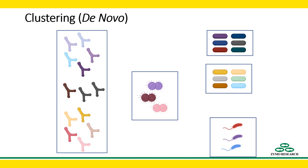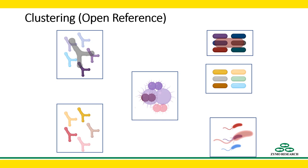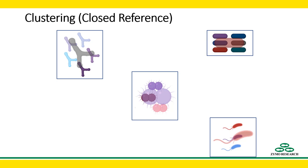Reference databases are now pretty extensive, and it would be a shame not to use them, especially if they were built using our sample type. In a process called open reference clustering, we can quickly cluster sequences similar to what we find in our database around those reference sequences, then carry out something like de novo clustering on sequences that don't quite fit. And if there is open reference clustering, there must be closed reference clustering, where we require that all sequences be clustered around reference sequences from the database, dropping those that don't fit. This works for thoroughly studied sample types like human stool, but for poorly studied sample types, much of what's interesting may get dropped — an example of reference bias.